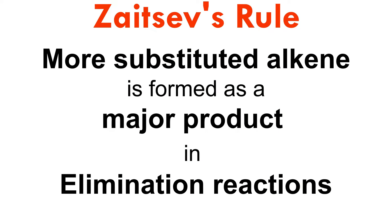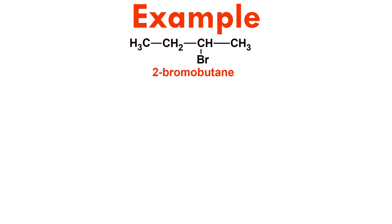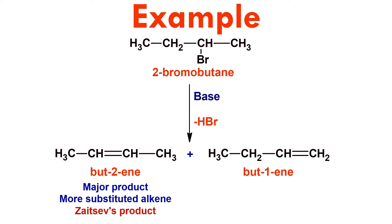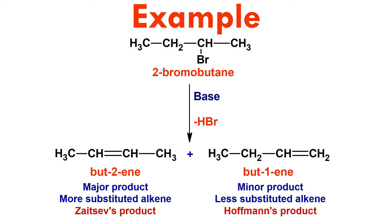According to Zaitsev's Rule, the more substituted alkene is formed as the major product in elimination reactions. When a strong base is added to 2-bromobutane, the major product formed is 2-butene. It is an elimination reaction involving the removal of one HBr molecule. The major product is the more substituted alkene and is referred to as Zaitsev's product, while the minor product is the lesser substituted alkene and is referred to as Hofmann's product. In this case, 1-butene is the minor product.